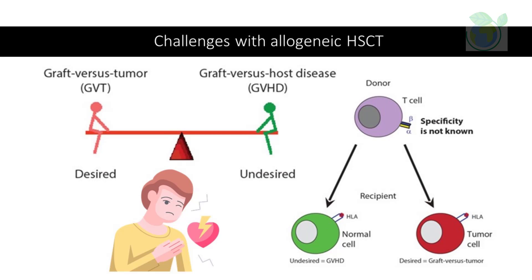Furthermore, transplantation also carries a high risk of infection and other complications due to the need for immunosuppression. These limitations of allogeneic HSCT have led to the search for alternative therapies, including gene therapy and genome editing, that are able to correct the genetic defect without the need for a donor or the risks associated with transplantation. Base editing, as mentioned before, has shown promise as a precise and efficient alternative to traditional genome editing methods and offers the potential to circumvent the limitations of allogeneic HSCT.